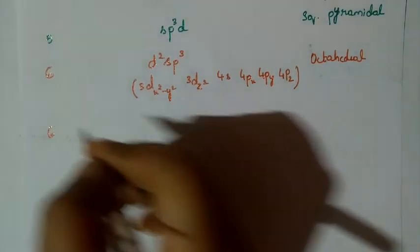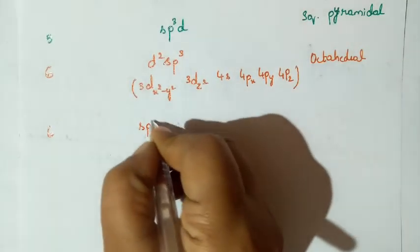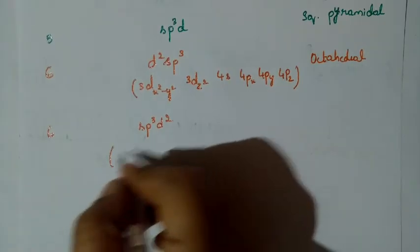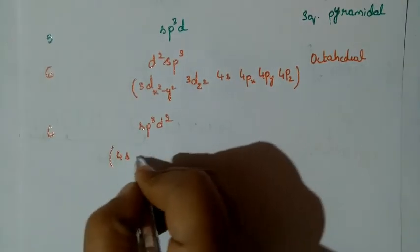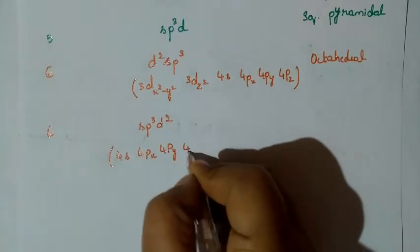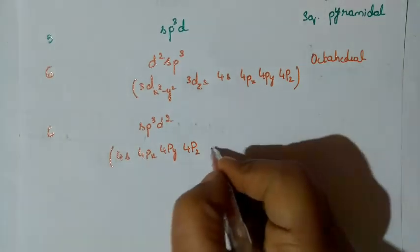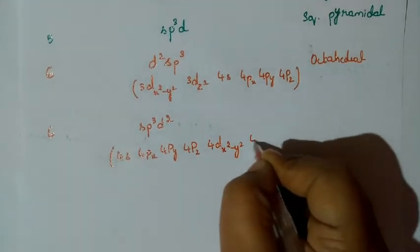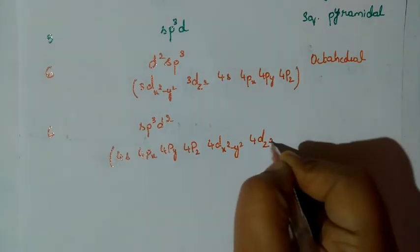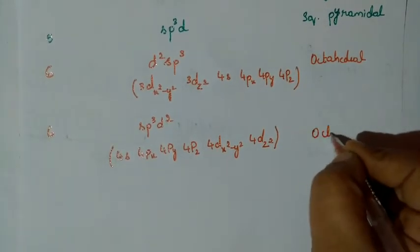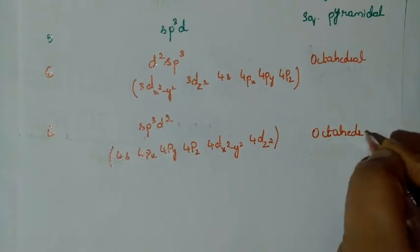Likewise for coordination number 6, another possibility is SP3D2. This starts with 4S, 4PX, 4PY, 4PZ, then 4D x²−y² and 4D z². The geometry is again octahedral.